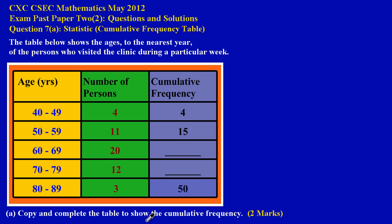In part A, they're asking us to copy and complete the table to show the cumulative frequency, and that's an easy two marks. This method for filling out a cumulative frequency table only applies to a cumulative frequency table — it doesn't apply to other statistics charts.